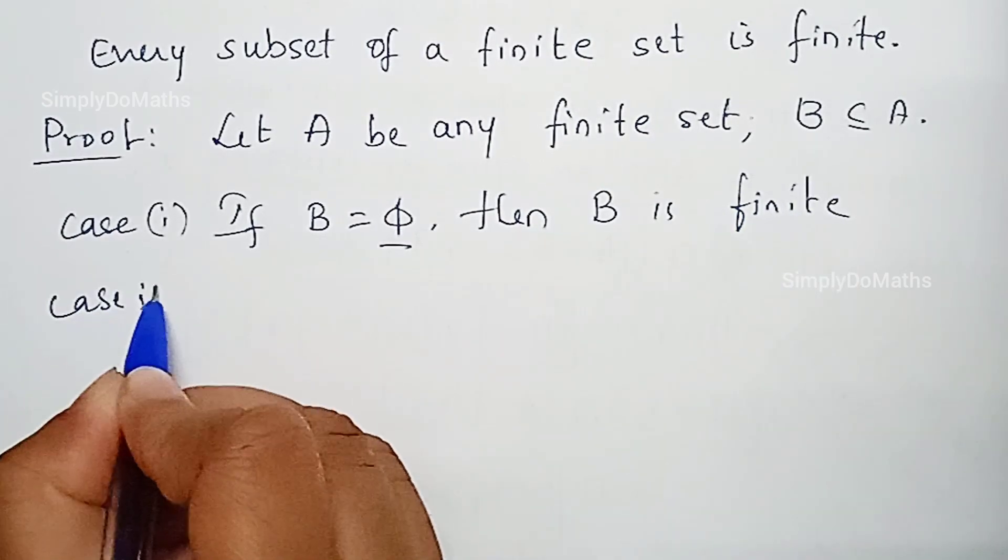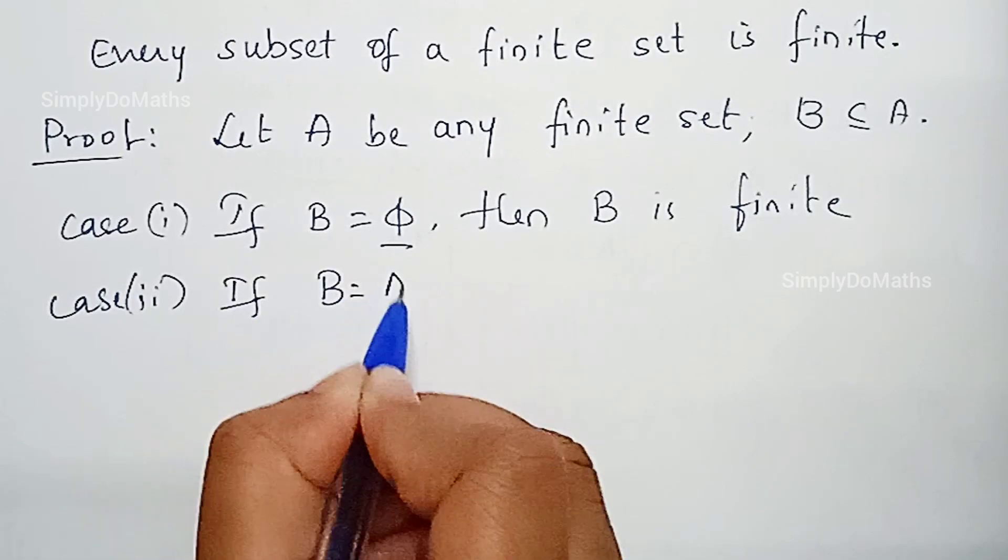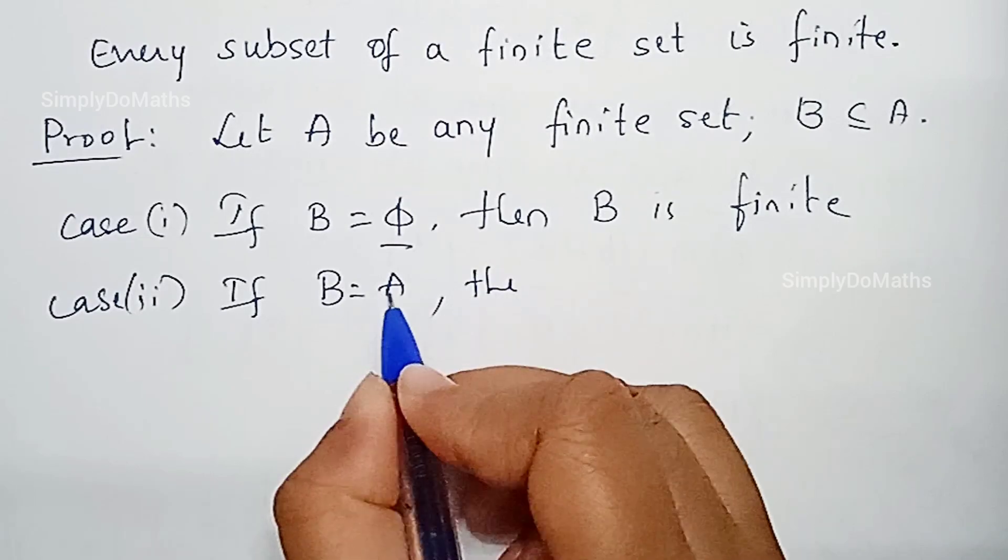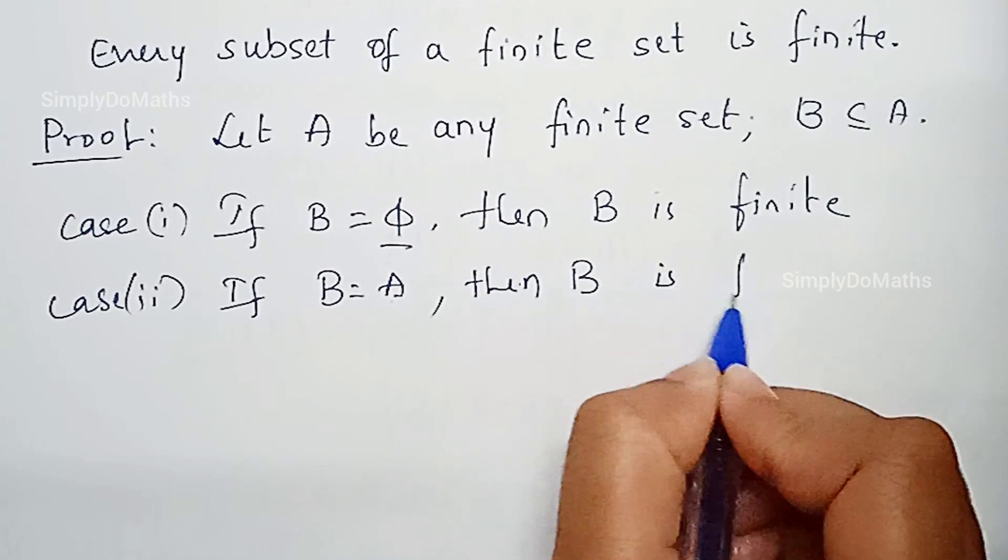Let's go with Case 2. If B equals A, since A is finite and A equals B here, B equals A implies B is also finite.